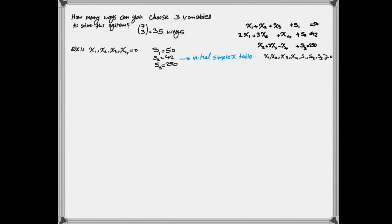Now suppose we pick another four variables and put them equal to zero. In the second example, I chose x1, x4, s1, and s2 equal to zero, and I solve the system for the rest. Remember, those set to zero are the non-basic variables, and those we solve for are the basic variables. So in this case, the basic variables are x2, x3, and s3.